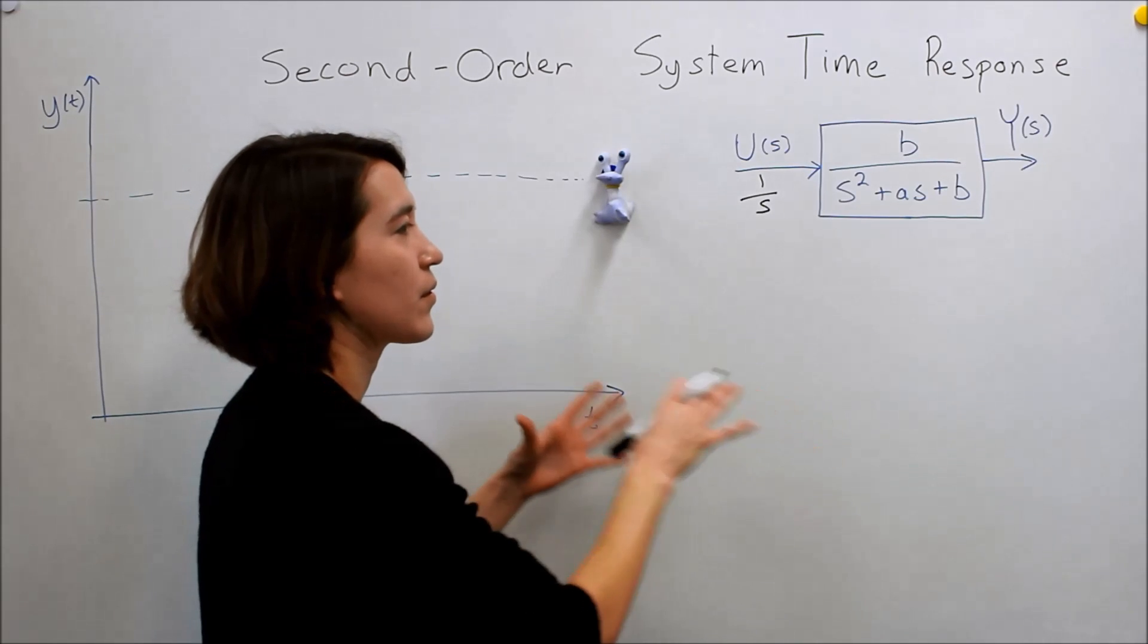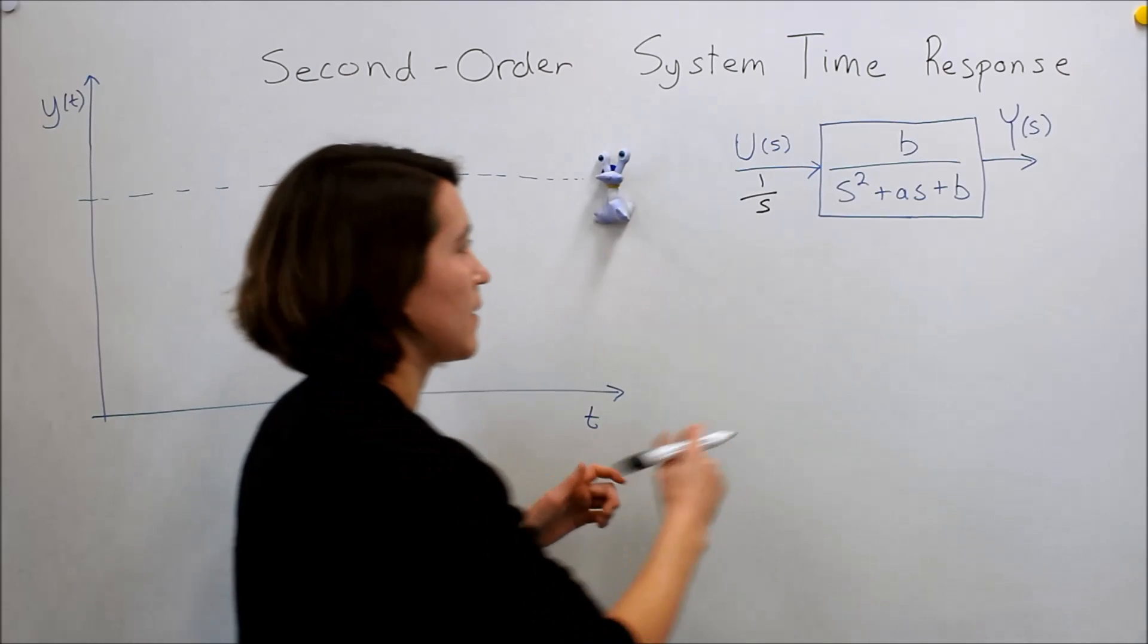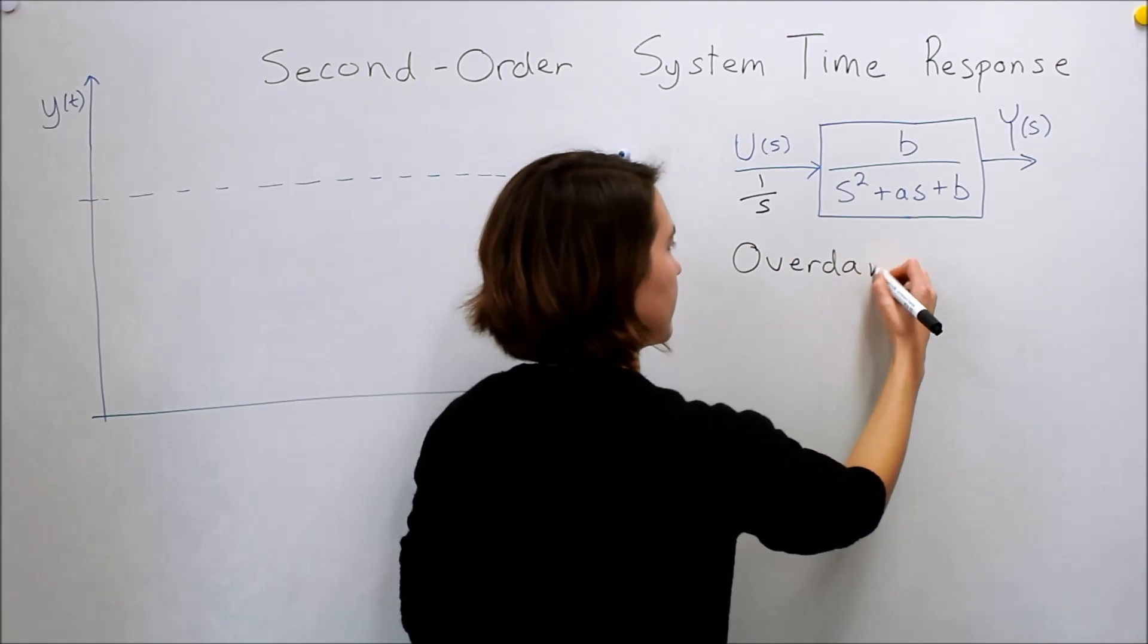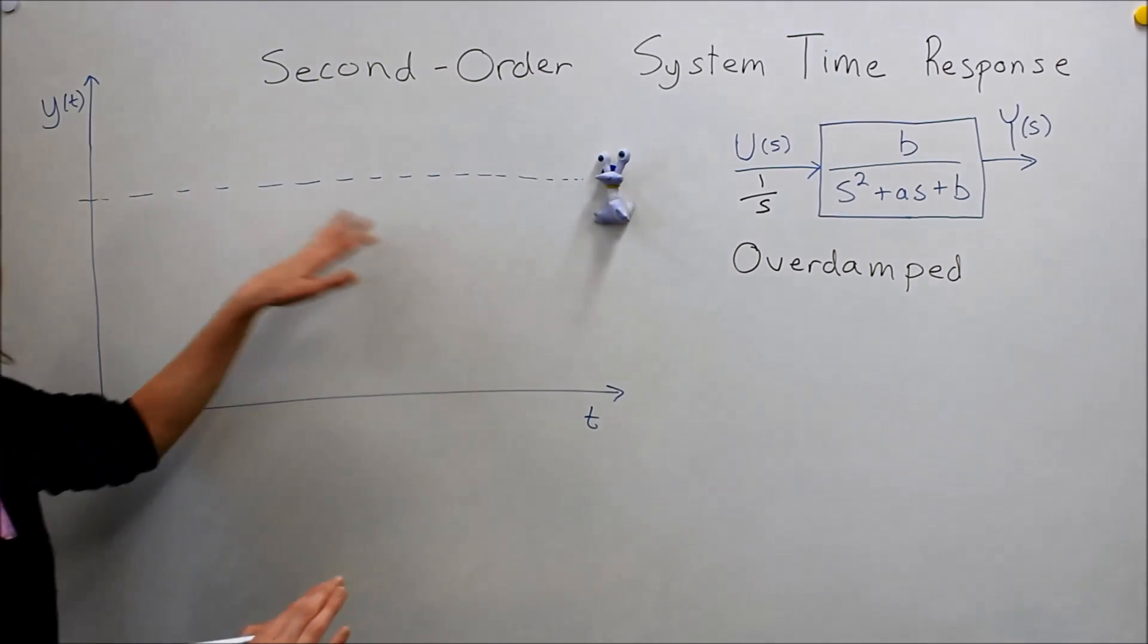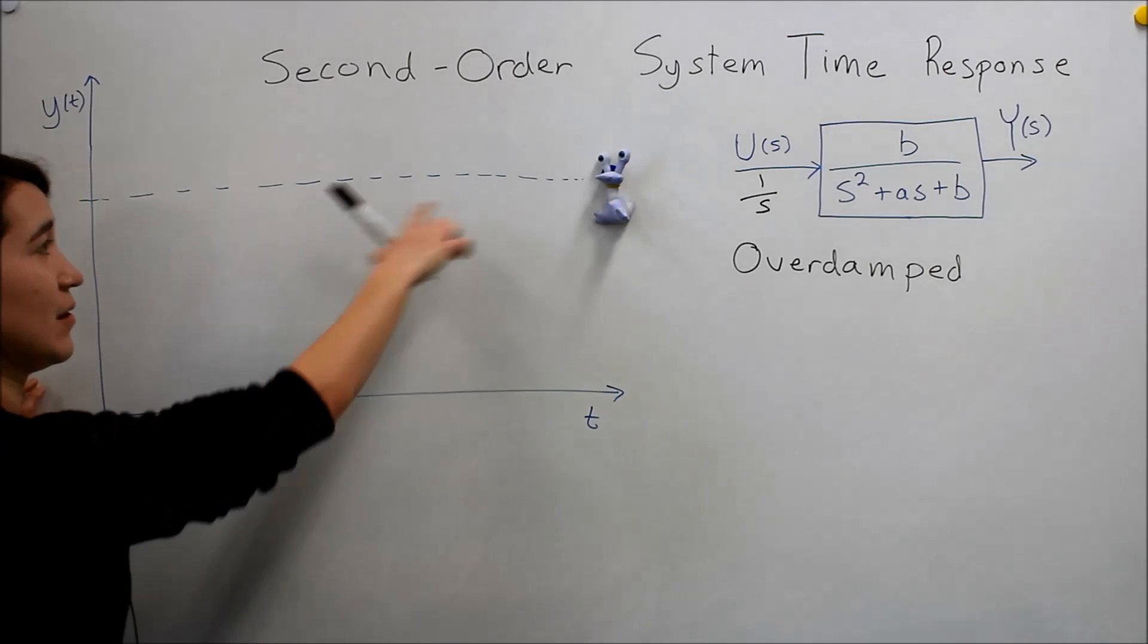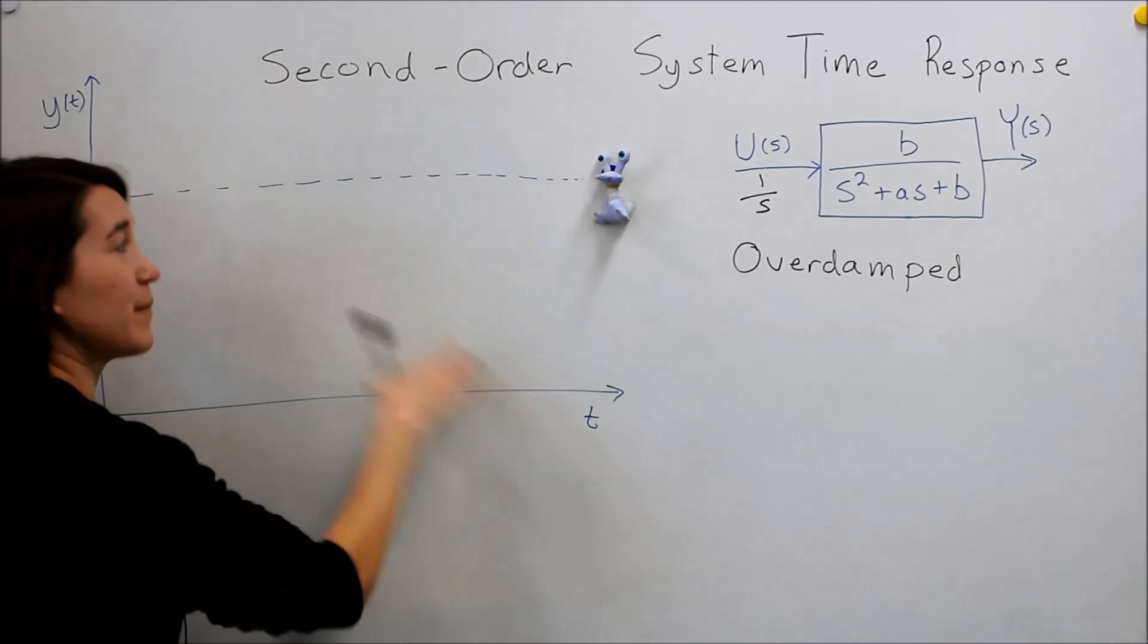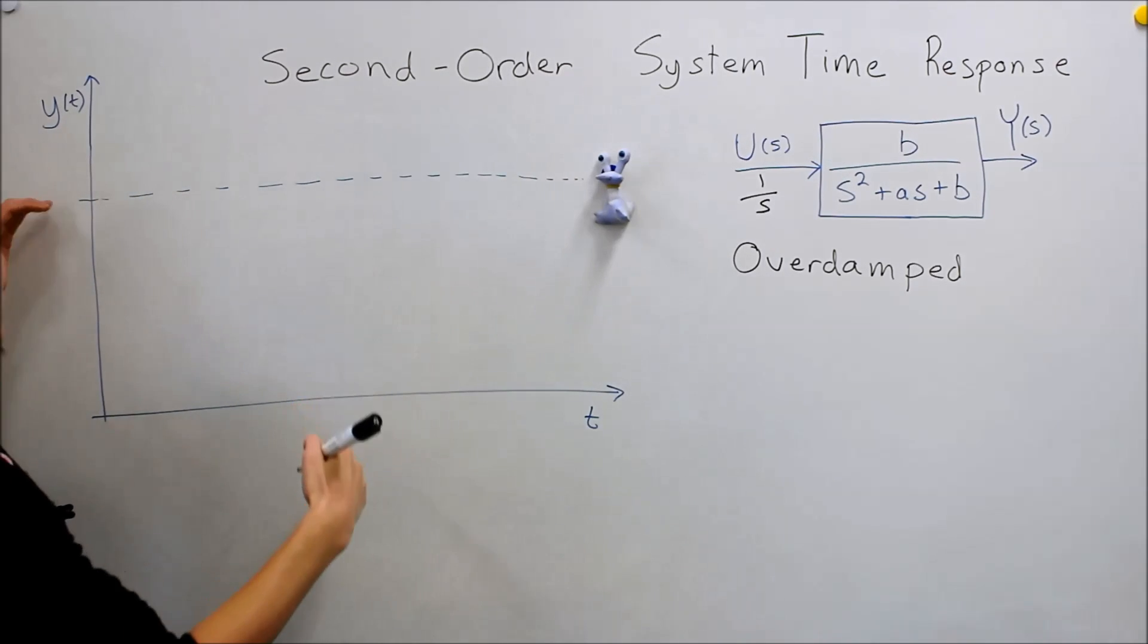There's a few different terms that we're going to use. The first one is going to be for a system that's called over-damped. We're going to have our system here, the objective is to feed Valerie. And in order to feed her properly, we have to get the food to stay, over time, stay at this value, so this is our target value.